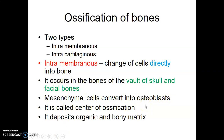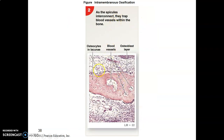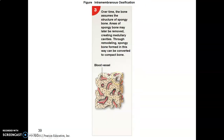Osteoblasts lay down osteoid to form a center of ossification with deposits of organic bony matrix. Mesenchymal cells aggregate, differentiate into osteoblasts, and begin ossification. Neurovascular structures then invade the forming tissue. The bony spicules connect, blood vessels form in between them, and over time the bone becomes vascularized. The central portion with numerous blood vessels becomes spongy bone and may be remodeled to form the medullary cavity.